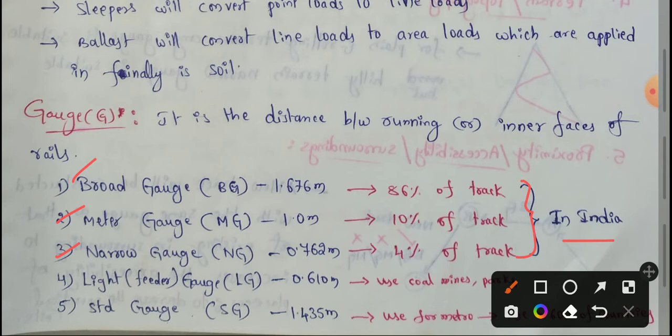First, we have broad gauge, abbreviated as BG. The distance between the inner faces of rails is 1.676 meters.